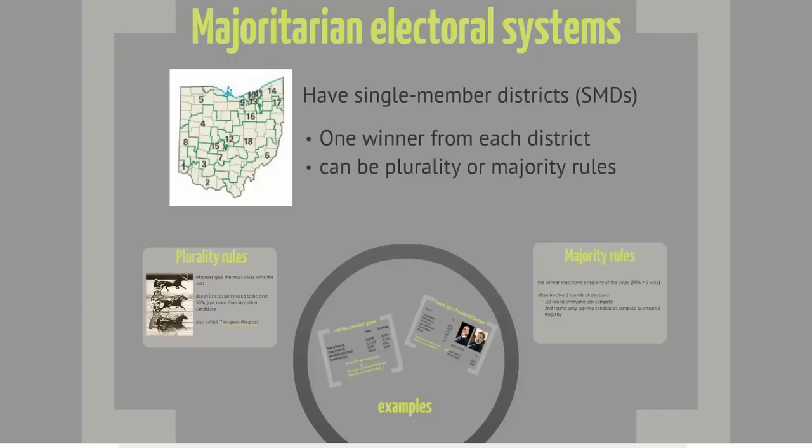Each district sends one representative after the election. For the Senate election, Ohio itself essentially becomes one single-member district — we have one senator go up at a time, and that senator wins the whole state. Within a single-member district, there are basically two ways to determine who gets the seat: plurality rules or majority rules.